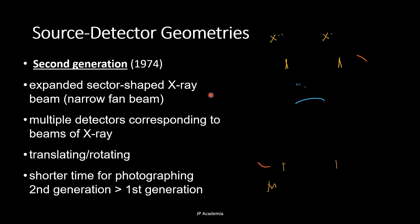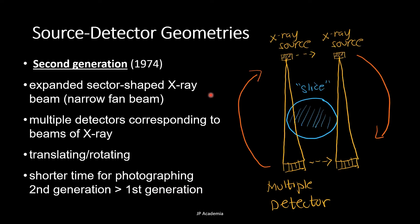Next, we have the second generation. It has an expanded sector shape of X-ray beam, described as a narrow fan beam, as shown here. It has multiple detectors corresponding to beams of X-rays, and its motion is described by this. So it will translate first as it scans the patient, then it will rotate to another angle. It has a shorter time for photographing compared to the first generation.